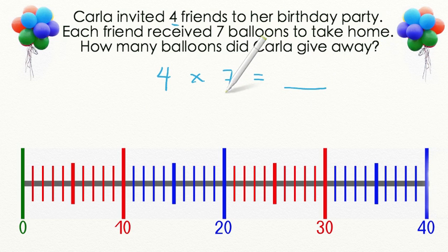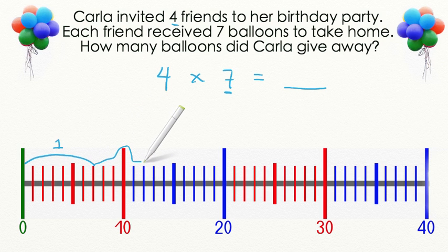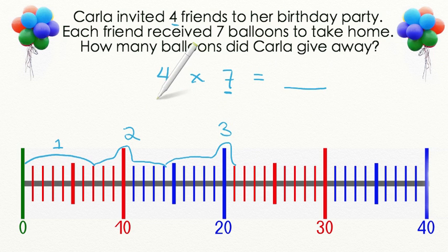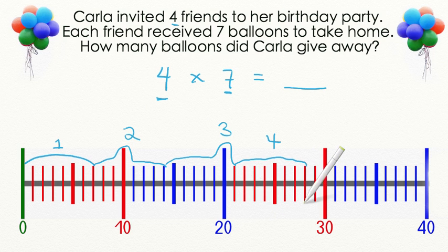Let's use our number line to find the product of this equation. We know that we are going to be creating groups of 7. Let's count to 7 together: 1, 2, 3, 4, 5, 6, 7. So we have our first group. Then our second group: 1, 2, 3, 4, 5, 6, 7. Then our third group: 1, 2, 3, 4, 5, 6, 7. One more to go — our fourth group: 1, 2, 3, 4, 5, 6, 7.